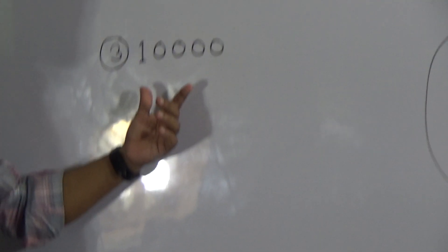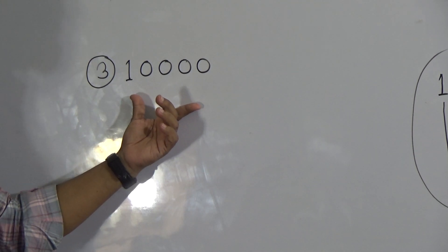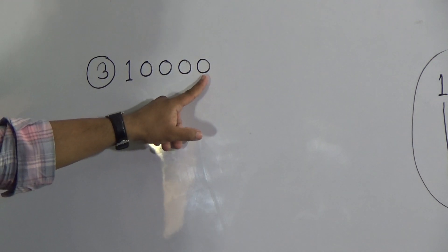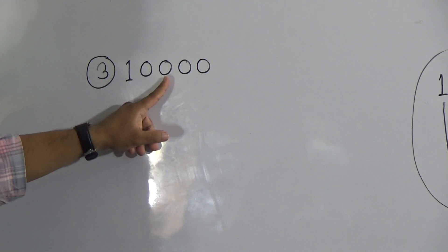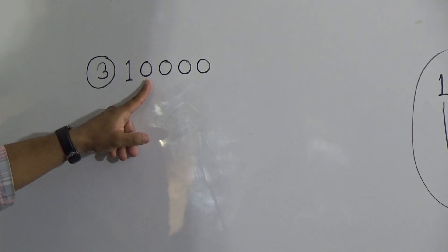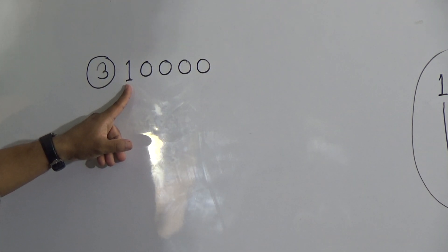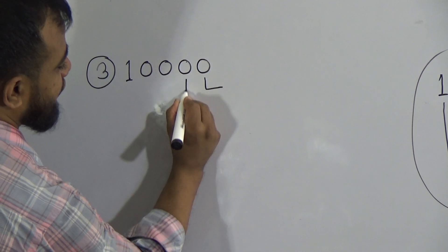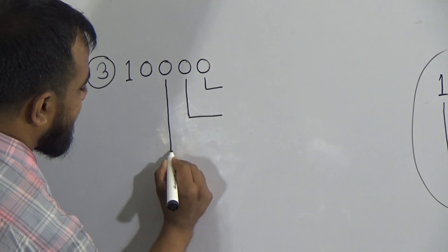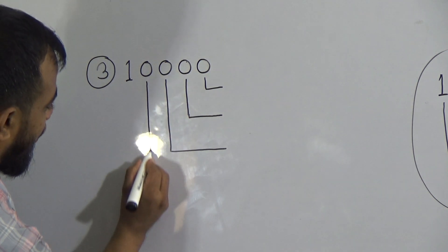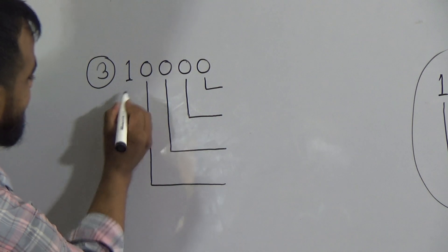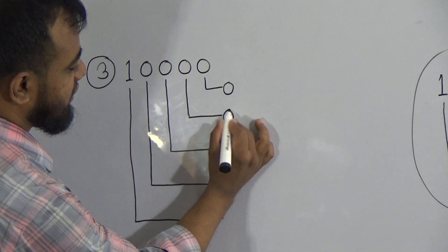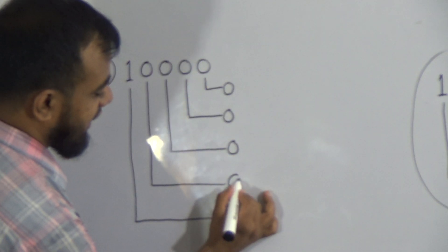The last problem today is 10000 — ten thousand. Notice this number has five digits: 1, 0, 0, 0, 0. The rightmost zero is in the ones place, the second zero from the right is in the tens place, the third zero is in the hundreds place, the fourth zero is in the thousands place. The place value name for this 1 is 'ojuts' (ten-thousands).